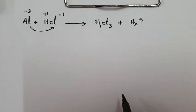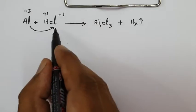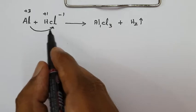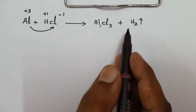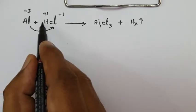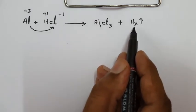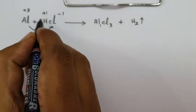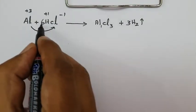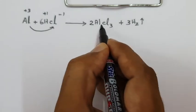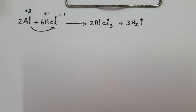To balance this reaction: there are 3 chlorines on the product side and 1 chlorine per HCl. Multiplying 3 × 2 = 6 gives 6 hydrogens and 6 chlorines, requiring 2 aluminium atoms. The balanced equation has 2 Al, 6 HCl → 2 AlCl₃, 3 H₂.